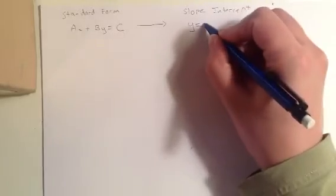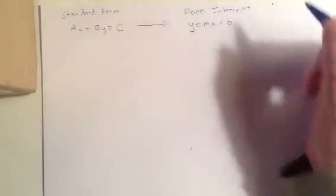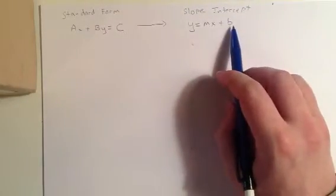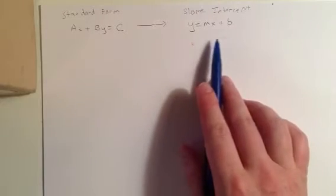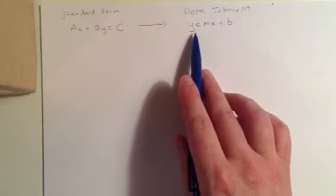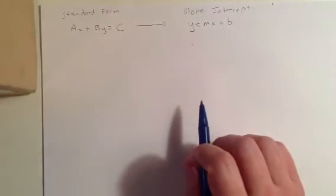So remember that was y equals some number, call it m, times x, plus some other number, call it b. So here the m was our slope and the b was our y-intercept. So we've actually done this in the reverse form before on your last unit test before break. So now we're just going the other way. I'm giving you the standard form, we're moving into slope-intercept form.